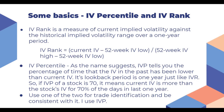IV percentile, or IVP, tells you the percentage of time that the IV in the past has been lower than the current IV. So if we have 252 trading sessions in a year and the current IVP is 70%, it means that 70% of those 252 days the IV was lower than today's IV. The look-back period is usually one year, just like IVR. You can use either of the two for trade identification, but you have to be consistent with whichever you use.